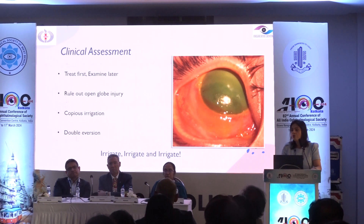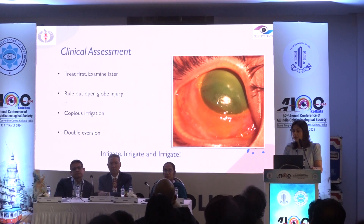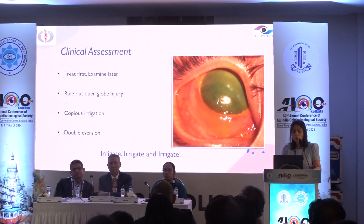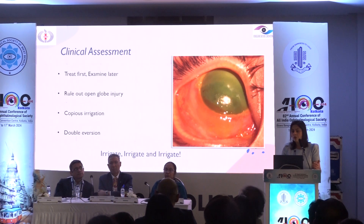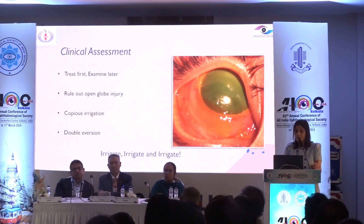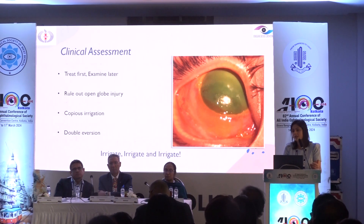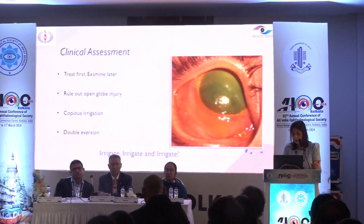This is one of the true ocular emergencies and the dictum here is: treat first and examine later. We need to do a quick examination to rule out open globe injury, then proceed with copious irrigation using the cleanest fluid easily accessible. Double eversion during irrigation is important to look for residual particulate matter. Litmus paper strips help to check the pH from the ocular surface.